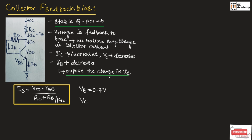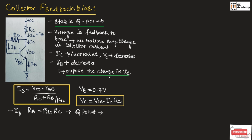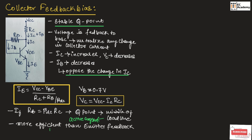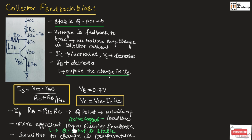If RB is equal to RC, then the Q-point will be in the middle of the load line, which means the transistor will be operating in the active region. This biasing is more efficient than emitter feedback biasing, meaning the Q-point is more stable. However, the collector feedback circuit is sensitive to change in temperature, which is one of the drawbacks of collector feedback biasing.